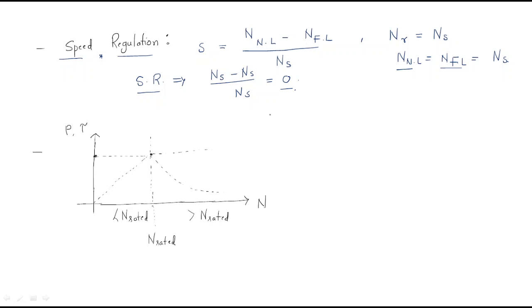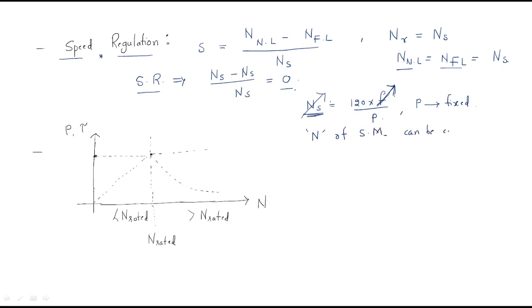The synchronous speed formula is Ns equals 120f divided by P. Here, the poles are fixed - poles value is constant, there is no change. We can't control the poles, but the only option to control the speed is frequency. By varying the frequency we can control the synchronous speed. So the speed of the synchronous motor can be controlled by frequency only. This is also an important point.